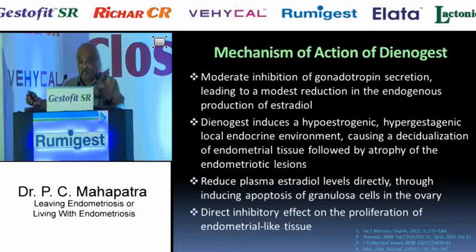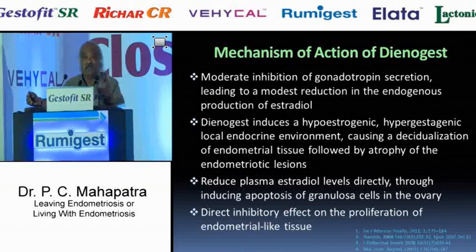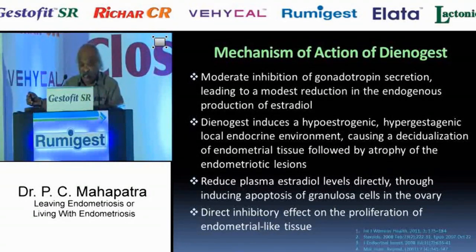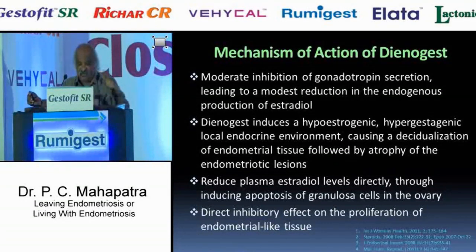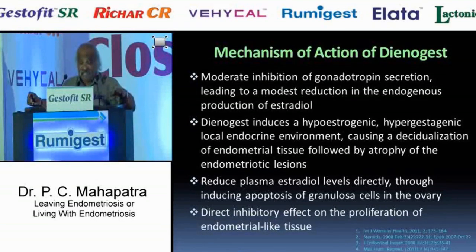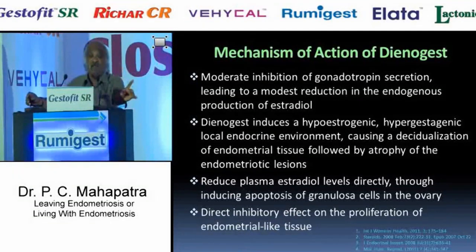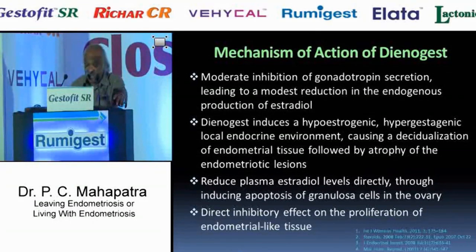The second action is at the level of the endometrium — specifically the ectopic endometrium — causing decidualization of the tissue and thereby reducing plasma estradiol levels. The third is a direct inhibitory effect on the proliferation of endometrial-like tissue, so there is a direct local peripheral action as well.